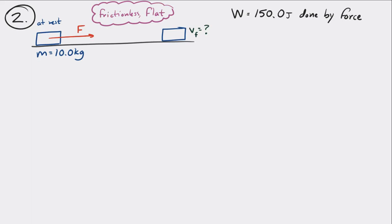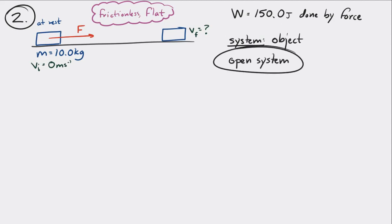the object begins at rest, so it doesn't have any kinetic energy. You're applying a force and doing some work. So if the system is the object plus the Earth — though there's no gravitational potential energy involved since the height never changes — you're doing work on it, so this is an open system.